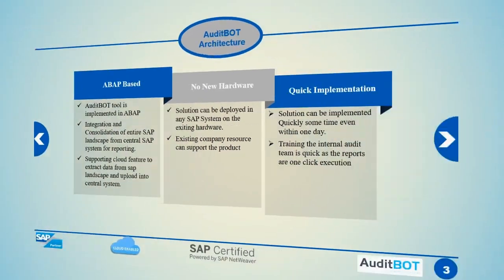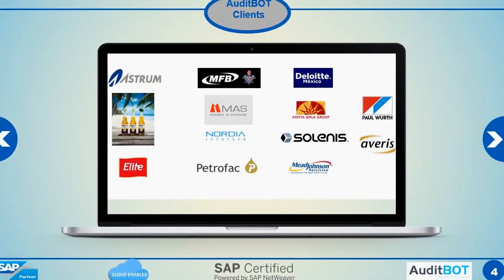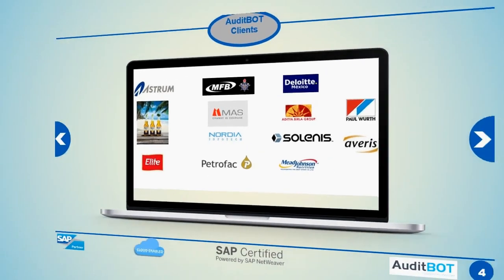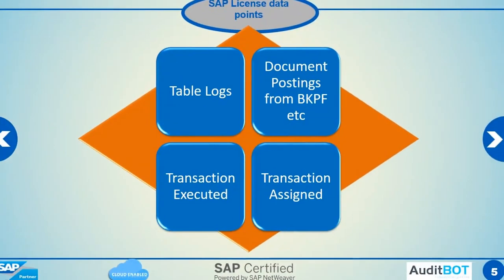Fortune 500 companies like Mead Johnson, Corona Beer, Deloitte, and Daikin America have used our tool and saved on their SAP license cost.